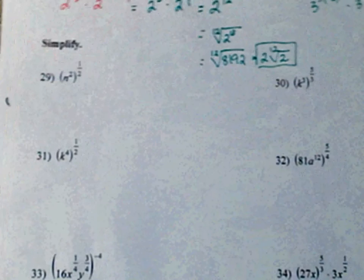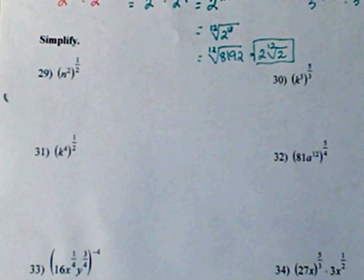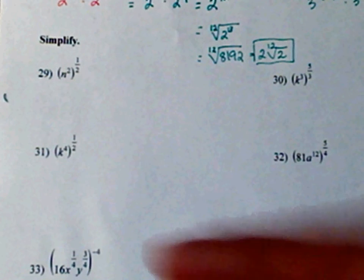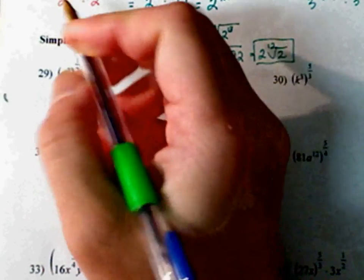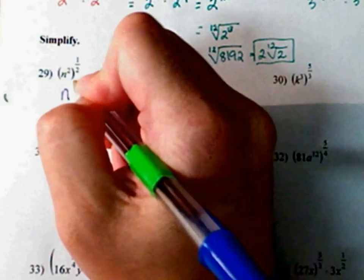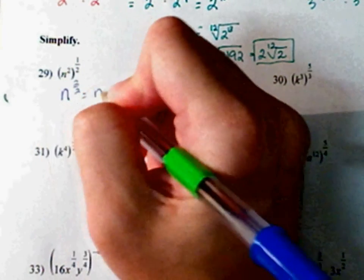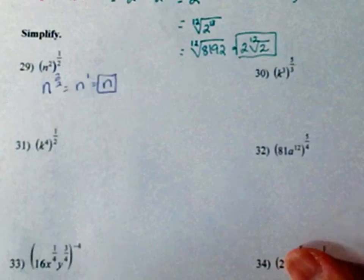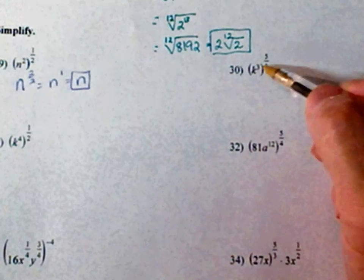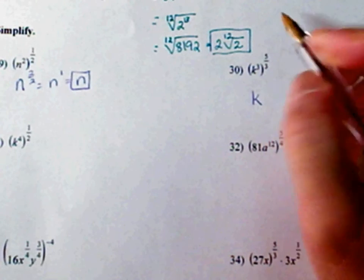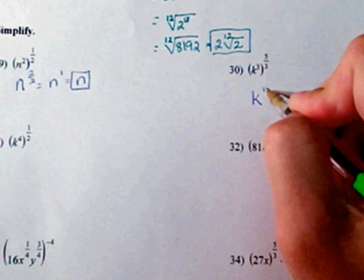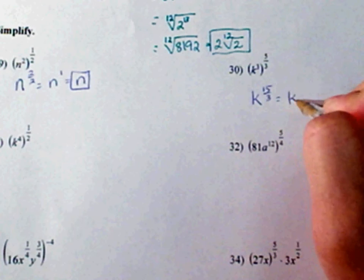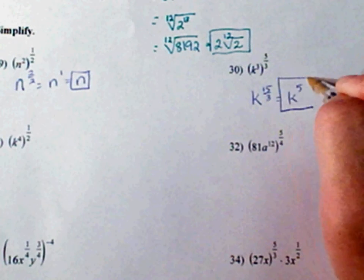Number 29. You're going to simplify. Notice there's a parenthesis here. Multiply your exponents. That's the same thing as 2 over 2, which is n to the 1st, which is n. Number 30. Same thing. 3 times 5 is 15 over 3, which is k to the 5th. Can't make it any smaller.